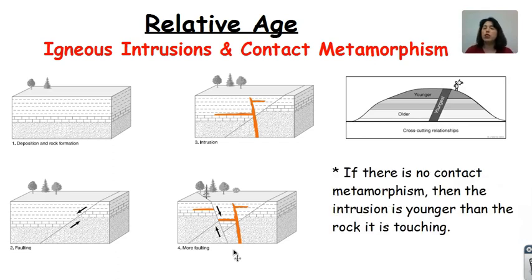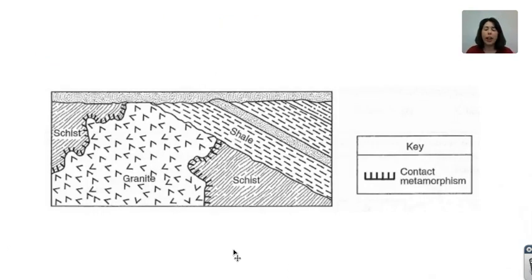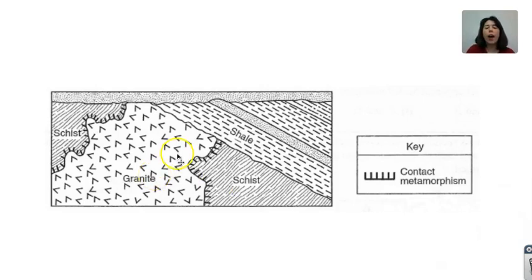You also want to make sure that you note: if there's contact metamorphism, the intrusion is younger than the rock it is touching. In this diagram, I have a granite intrusion with contact metamorphism indicated by these dashed lines outlining the intrusion. Since I have contact metamorphism between the granite and the schist, the schist must have been there before the granite intrusion — so the schist is older than the granite. However, between the shale and the granite, there is no contact metamorphism, so the granite must have been there prior to the shale. As a result, the shale is younger than the granite and the schist is older.